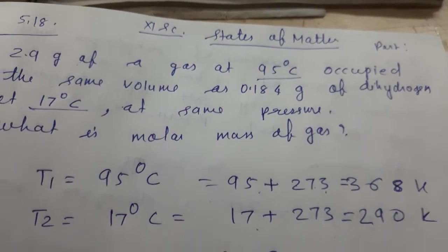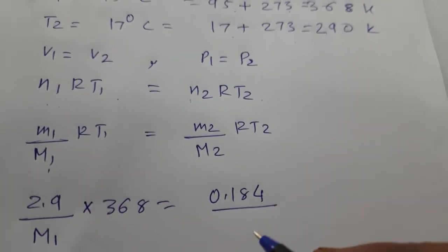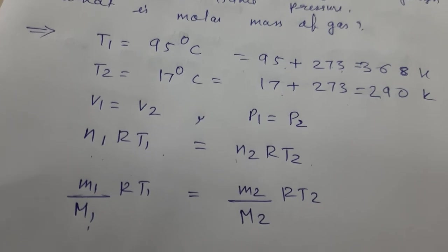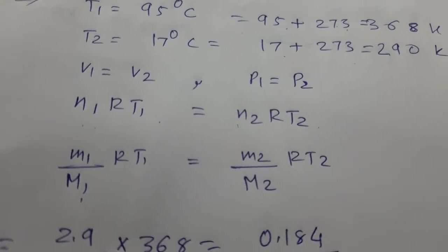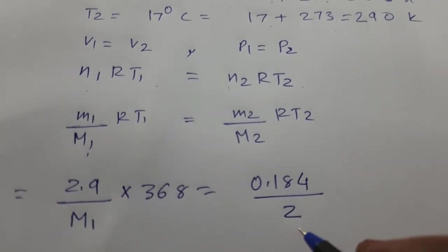R we do not know, so it will cancel. T1 equals 368. M2 is 0.184 grams. So 0.184 divided by what is our M2? M2 is dihydrogen, and molar mass of dihydrogen is 2. H2 means 2.